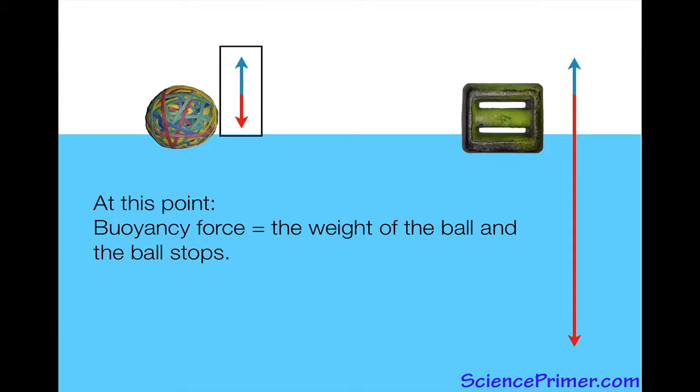If we pause here and ask what's going on, we can see if these lines are to scale. At this point, for the rubber ball, the buoyancy force equals the weight of the ball. And when these forces balance, the ball stops falling. We now have a force opposing gravity.